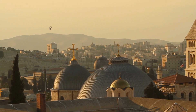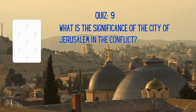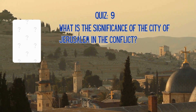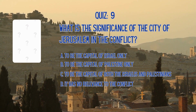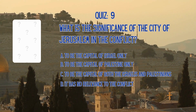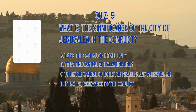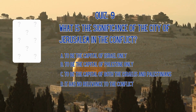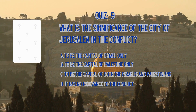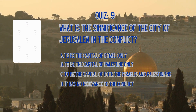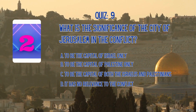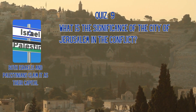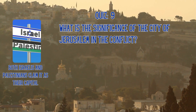Moving on, let's look at Jerusalem. What is the significance of the city of Jerusalem in the conflict? A. To be the capital of Israel only. B. To be the capital of Palestine only. C. To be the capital of both Israelis and Palestinians. Or D. Has no relevance to the conflict? The correct answer is that both Israelis and Palestinians claim it as their capital.